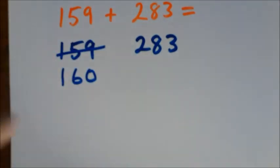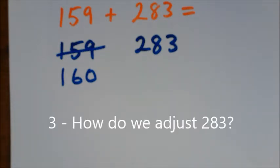Now this is called round and adjust, so we round one number and we adjust the other number. So we need now to adjust 283. How do we do that?